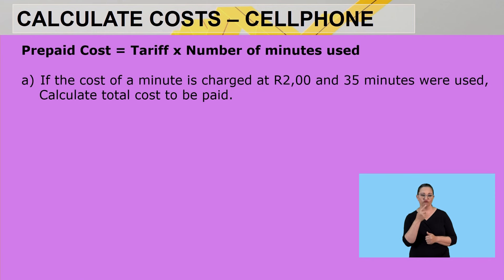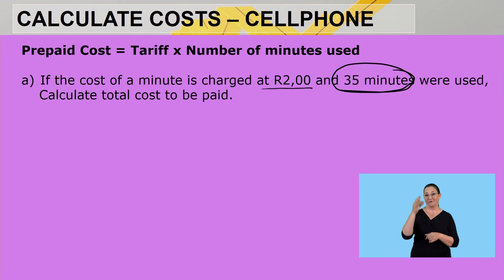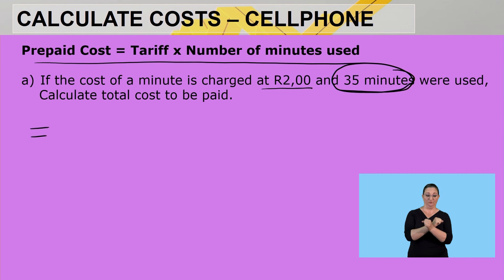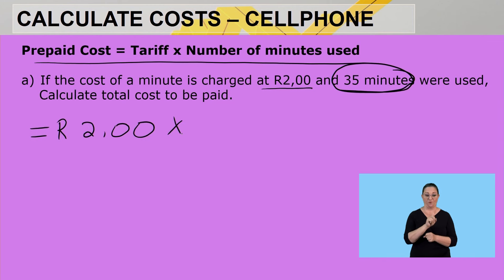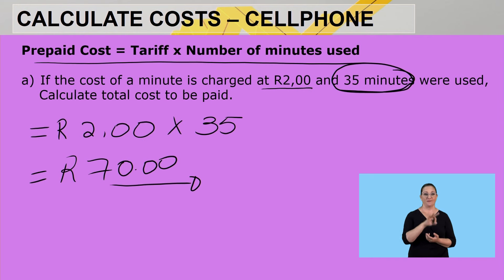For the prepaid example: if the cost per minute is charged at 2 rands and 35 minutes were used, calculate the total cost. The formula is tariff multiplied by number of minutes used. The given tariff is 2 rands multiplied by 35 minutes, giving a total amount of 70 rands for using 35 minutes.